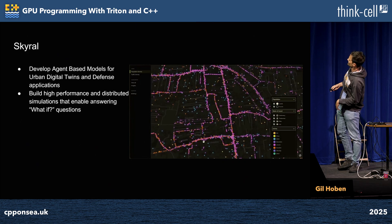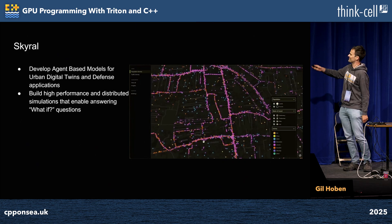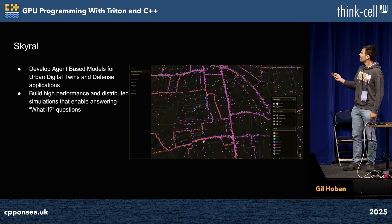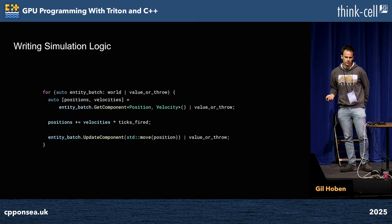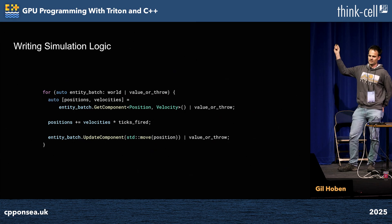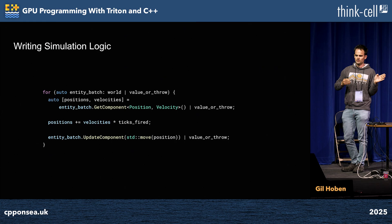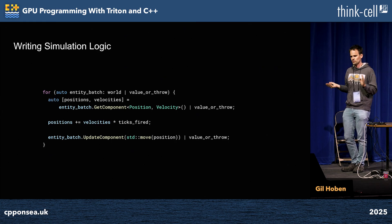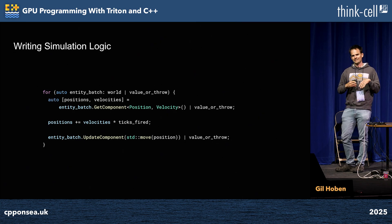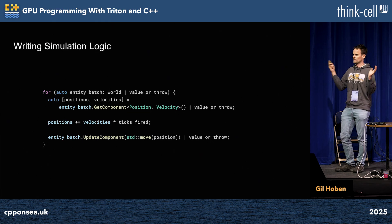Here's a graphic — not too high resolution — but we have dots that move around. At its very core, writing simulation logic may look like this: you have a view of the world, you iterate over it, you get the data out of the batch you're currently observing. You update, for example, the position based on the velocity and how long since your callback was last called. Then you update your position and hopefully everyone else can observe that.